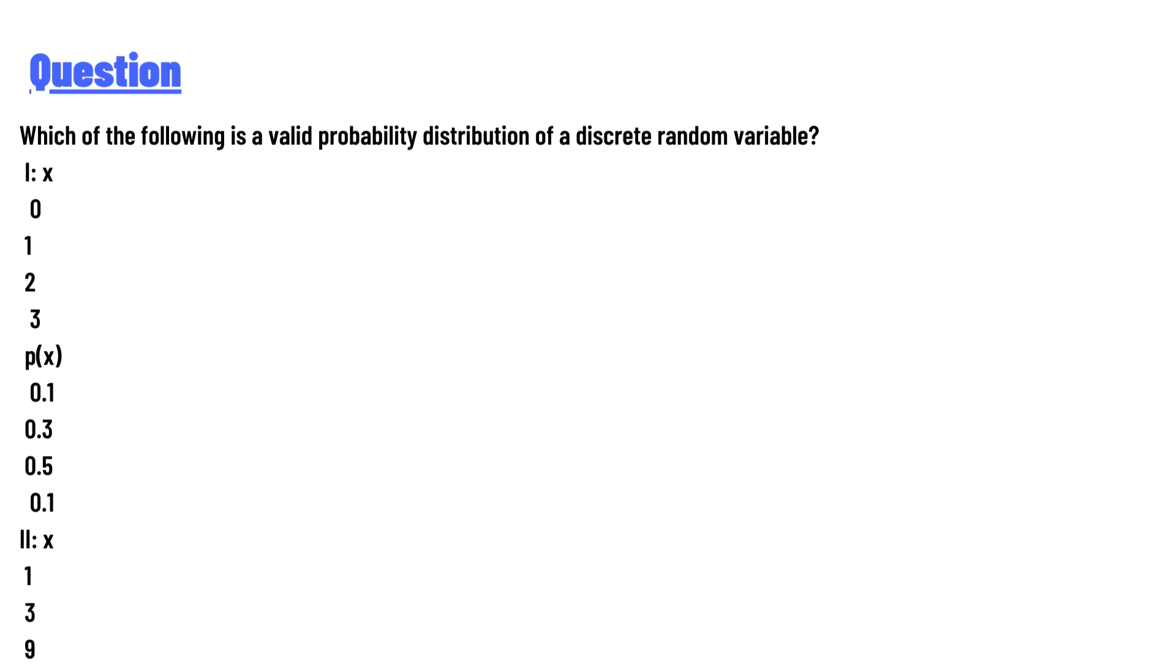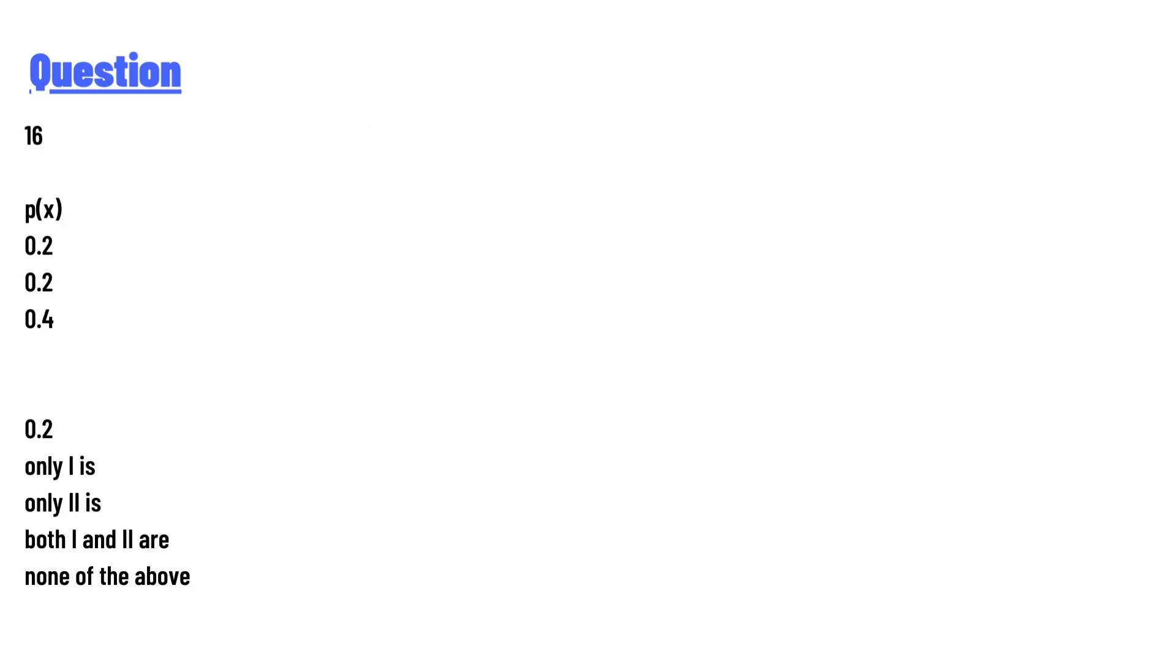Options are: only Distribution I, only Distribution II, both Distribution I and II, or none of the above. The answer to the question is: to determine which of the distributions given are valid probability distributions of a discrete random variable, we need to check two main criteria.